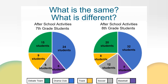Let's talk about some things that are the same between the two circle graphs. Both circle graphs show data from middle school students on the after-school activity they participate in. Both graphs have the same categories as shown by the key at the bottom of the slide. Both graphs have five categories or sections. You may have noticed that both graphs show the same fraction or percent of students on the debate team — 25% of 7th grade students and 25% of 8th grade students participate in the debate team.